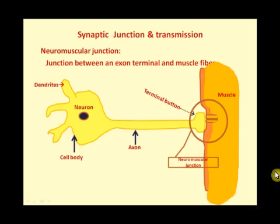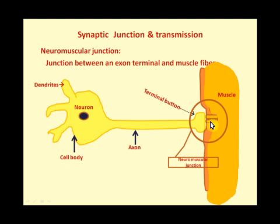This is a synaptic junction — specifically a neuromuscular junction. As you can see, this is a neuron, this is the axon, this is the terminal button, this is the muscle and its cell membrane. Here we have the receptor for the neurotransmitter, which in this case is acetylcholine.